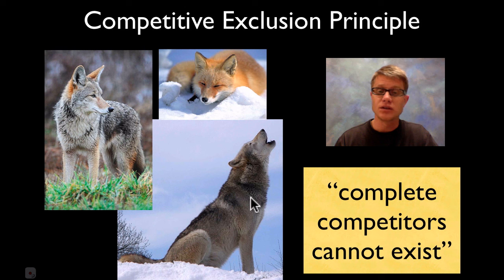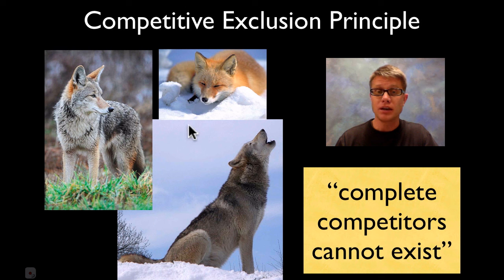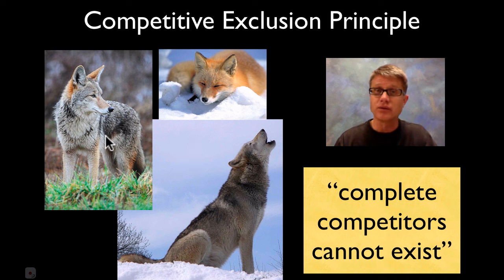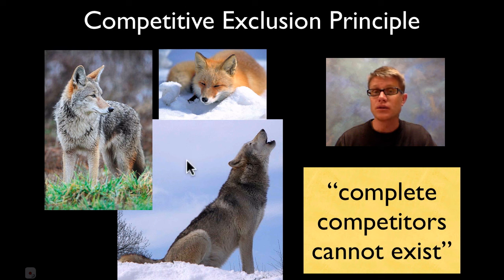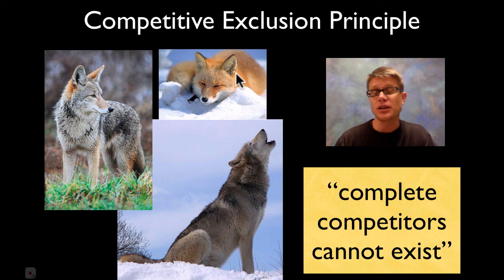Here's a real example: coyote, fox, and gray wolf. The gray wolf was absent from Yellowstone Park for a long time, so coyotes started to fill that role — developing pack-like behavior and filling niches once held by wolves. As a result, the red fox population declined because coyotes were exploiting their niche. When gray wolves were reintroduced to Yellowstone, they began killing coyotes by the thousands. Almost immediately, 50% of coyotes disappeared because wolves and coyotes were competing for the same food source. With fewer coyotes, the red fox population began to recover.